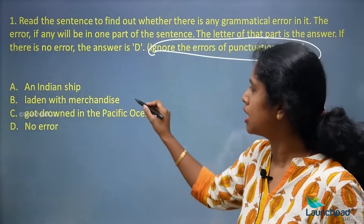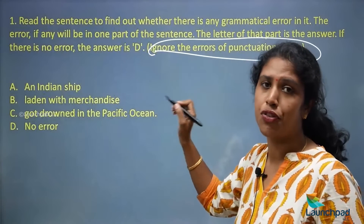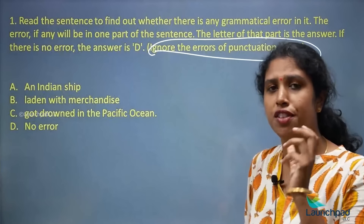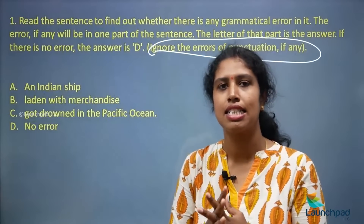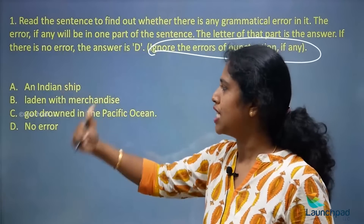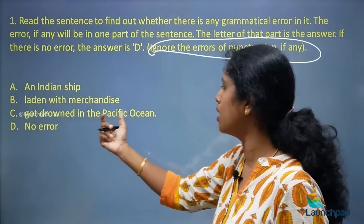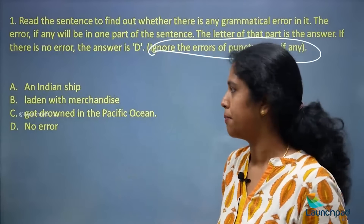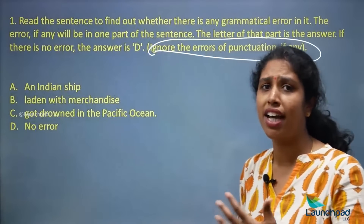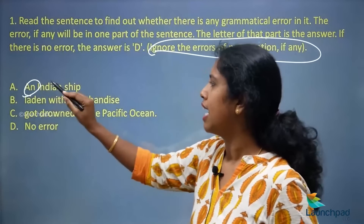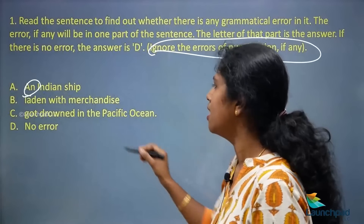You need to look out for the sentence fragment which contains the error. First, read and try to understand the sentence. The sentence is fragmented into three parts: the first fragment is 'an Indian ship,' the second is 'laden with merchandise,' and the third is 'got drowned in the Pacific Ocean.' Reading together: 'An Indian ship laden with merchandise got drowned in the Pacific Ocean.' The article 'an' is right, the preposition 'in' is right.